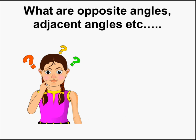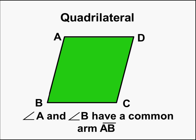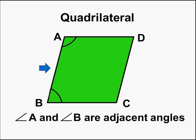Now we keep hearing about different angles — opposite angles, adjacent angles, etc. What are these? Let us see. Here, angle A and angle B have a common arm, which is arm AB or the line segment AB. Such angles which have a common arm are called adjacent angles. Hence, angle A and angle B are adjacent angles.